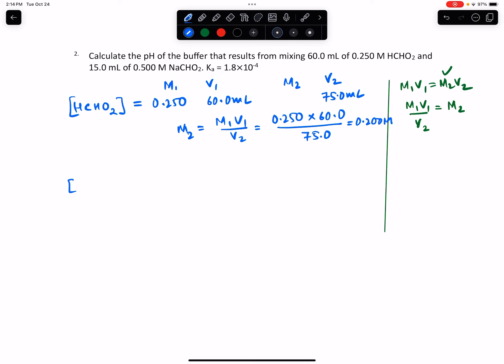For the conjugate base CHO2 minus, M1 is the concentration given to us, 0.500 molar. V1 is 15 mL, and V2 is 75 mL since both solutions are mixed.